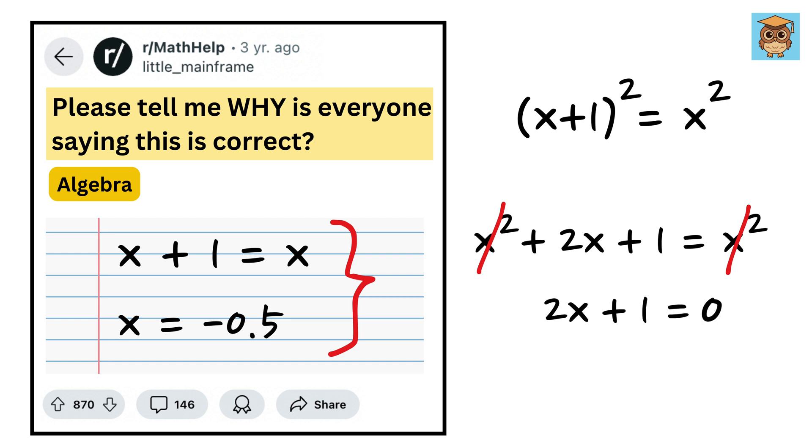We are left with 2x + 1 = 0. Take one to the right hand side to get 2x = -1, and then divide both sides by two to get x = -1/2 or -0.5.